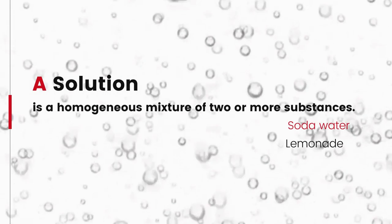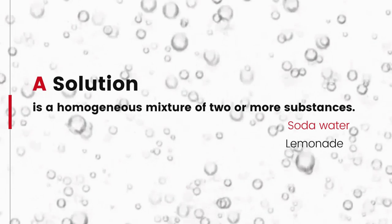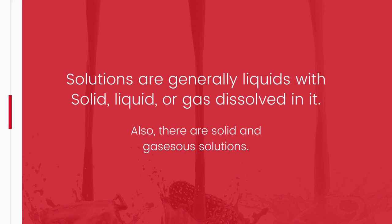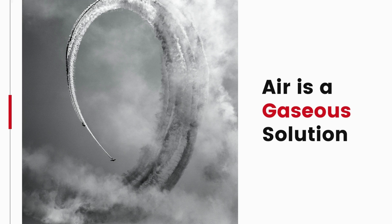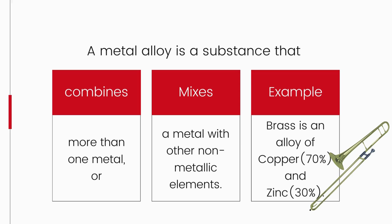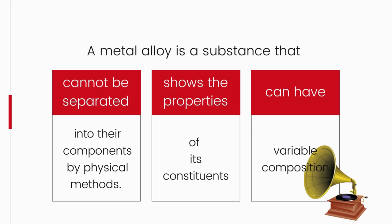A solution is a homogeneous mixture of two or more substances. You come across various types of solutions in daily life like soda water and lemonade. Usually we think of a solution as a liquid containing a solid, liquid, or gas dissolved in it, but we can also have gaseous solutions like air, and solid solutions like alloys. A metal alloy combines more than one metal or mixes a metal with non-metallic elements — for example, brass is an alloy of copper and zinc. Alloys cannot be separated by physical methods, but are considered mixtures because they show properties of constituents and have variable composition.